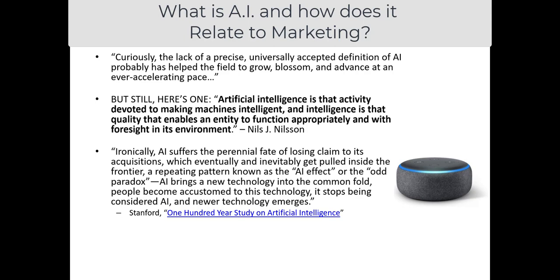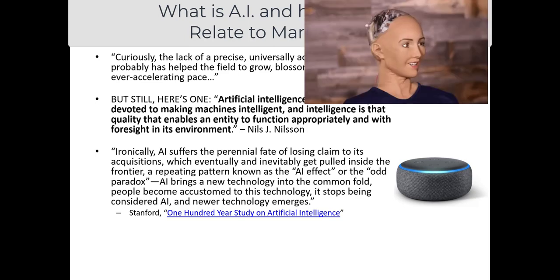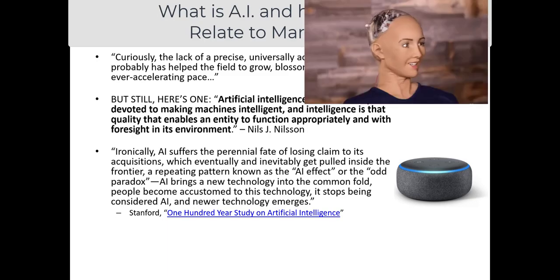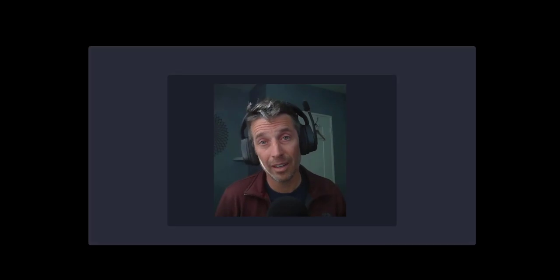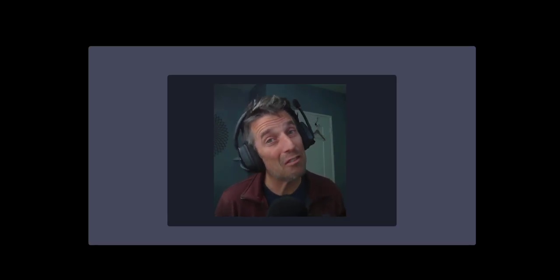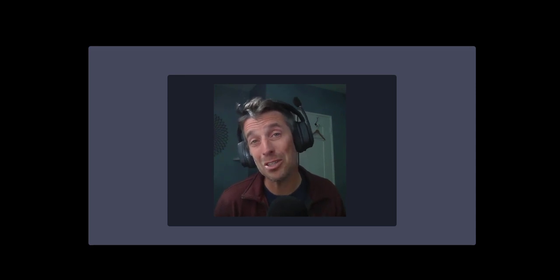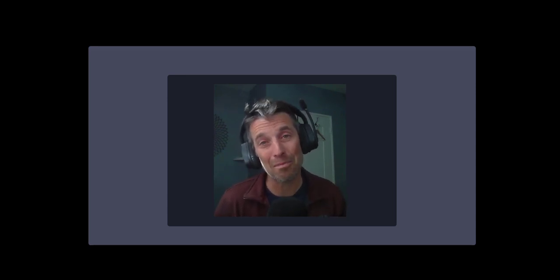So this sort of odd paradox: those things pushed at the edge to make machines intelligent — once we just get accustomed to them, we're no longer impressed and no longer think they are really intelligent, because we're always testing that against what we understand human intelligence to be. That was our brief introduction into the definition of marketing analytics and some of the common terms that we see floating around in this space.